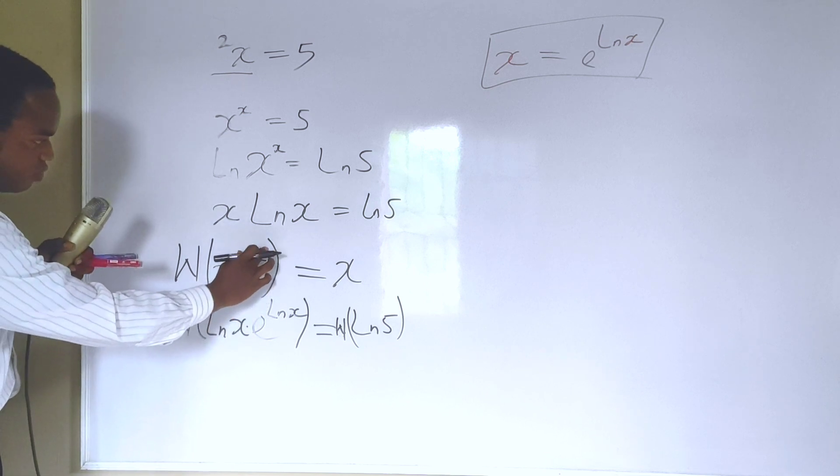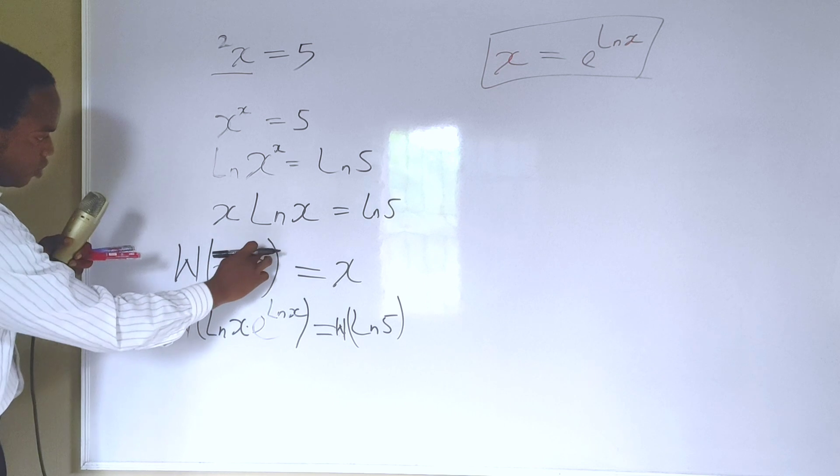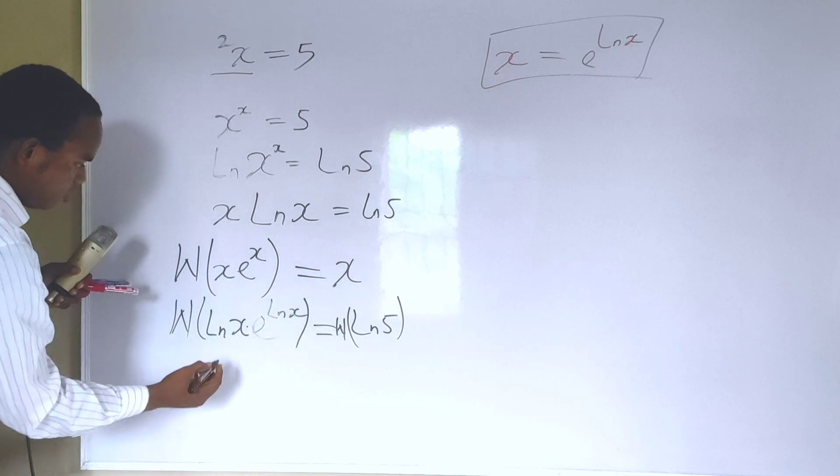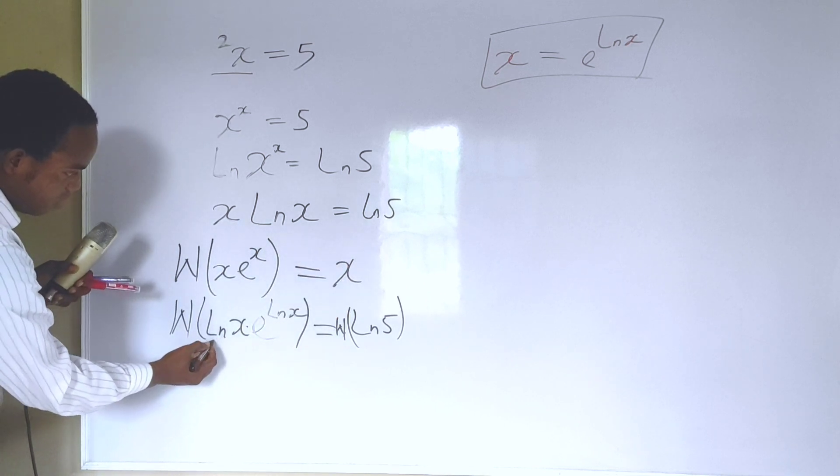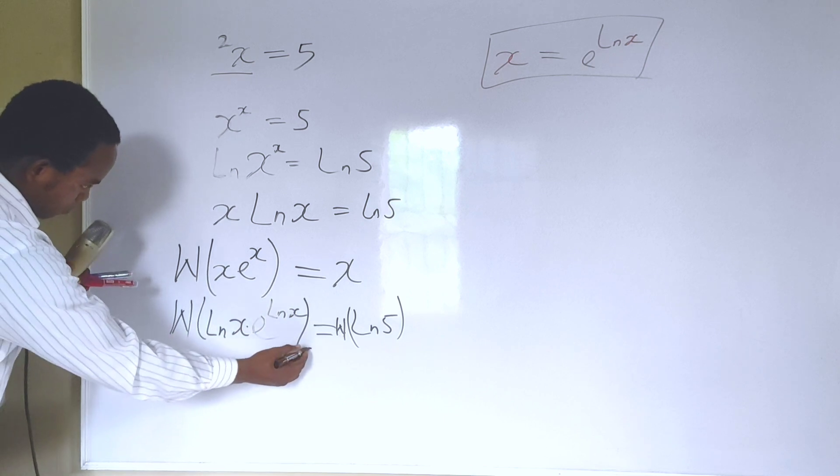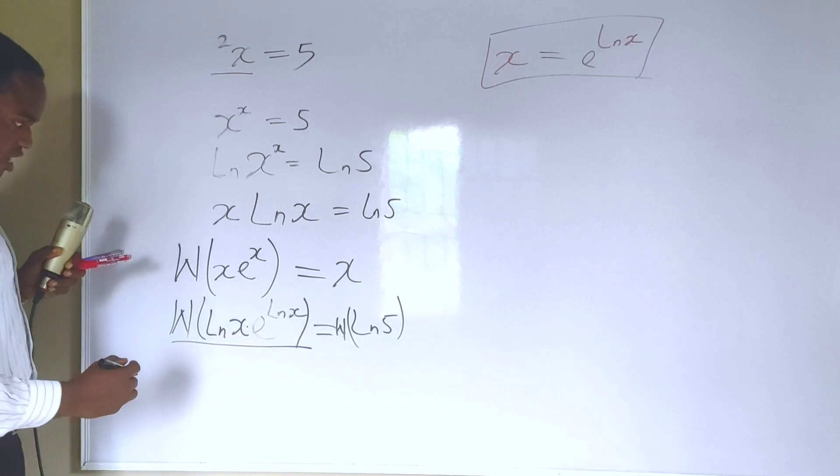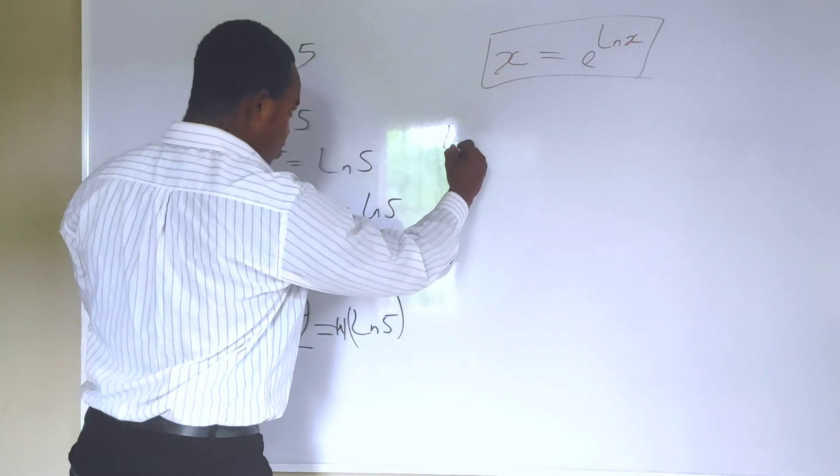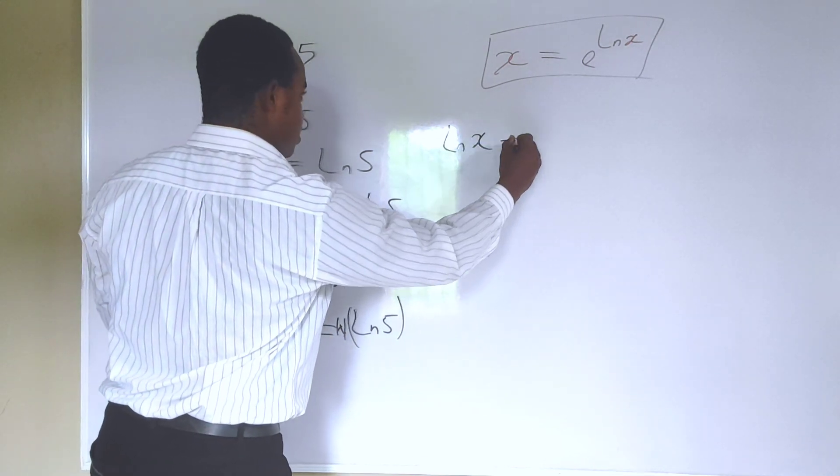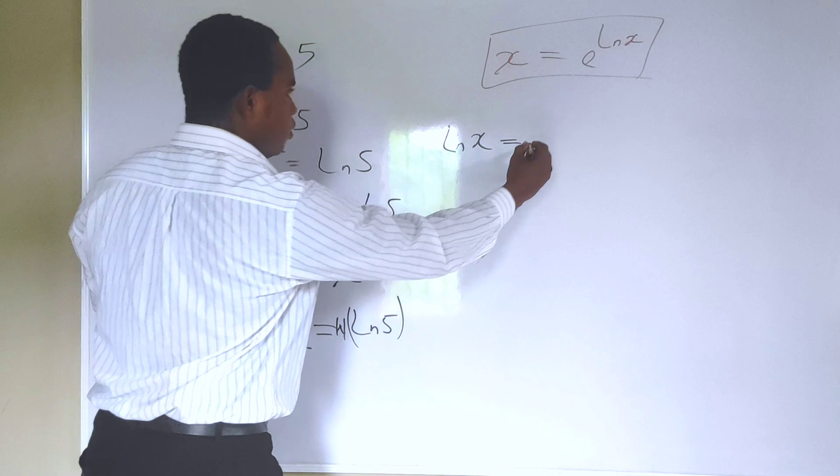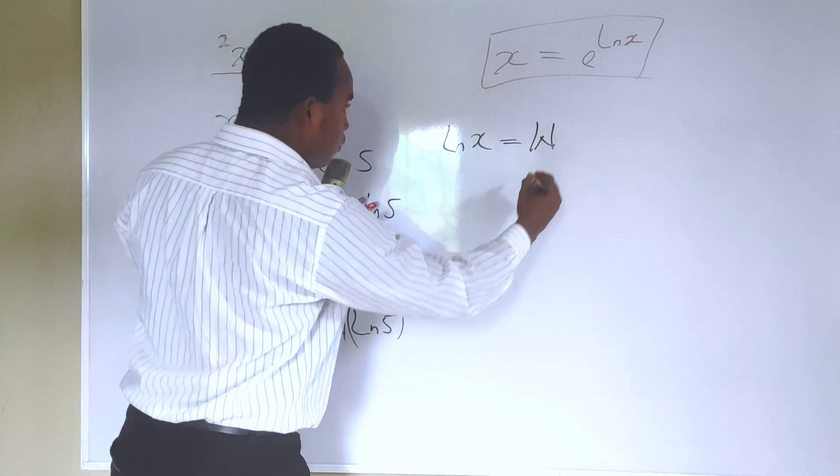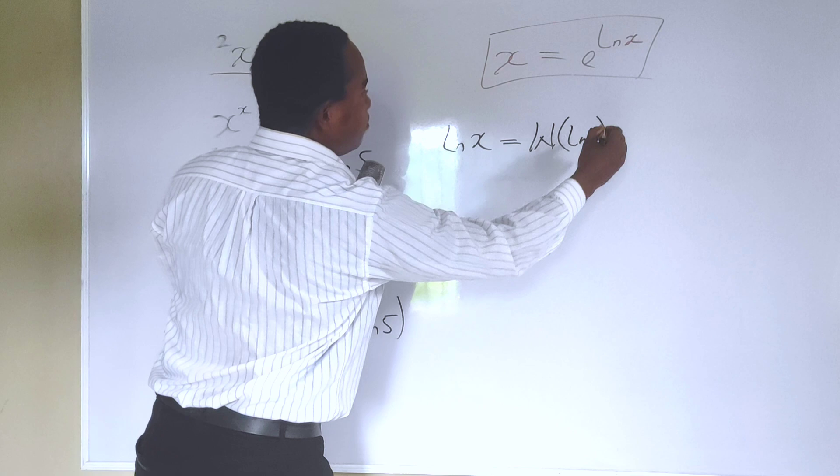And as you can see, the natural log we have here is going to be the solution for this expression here. So, this is reduced to the natural log of x equals the Lambert W function of the natural log of 5.